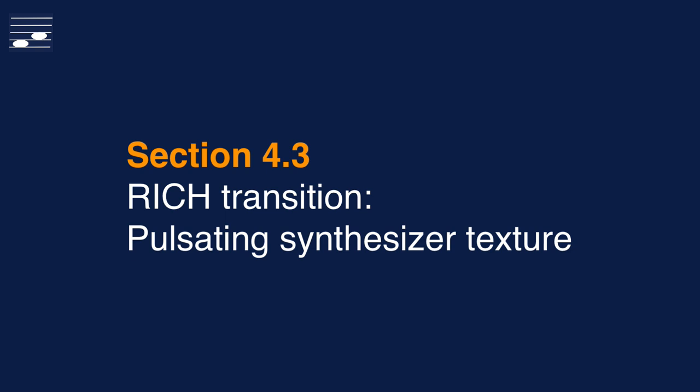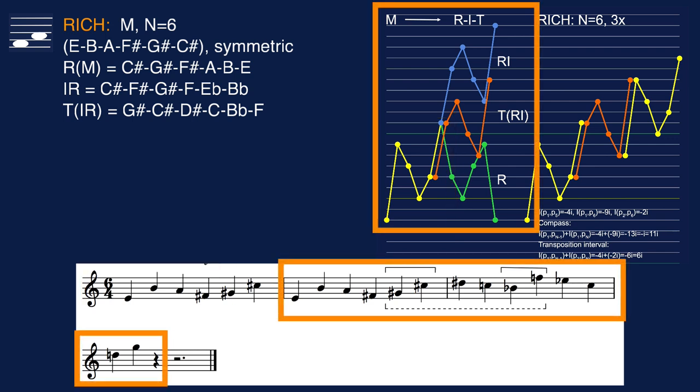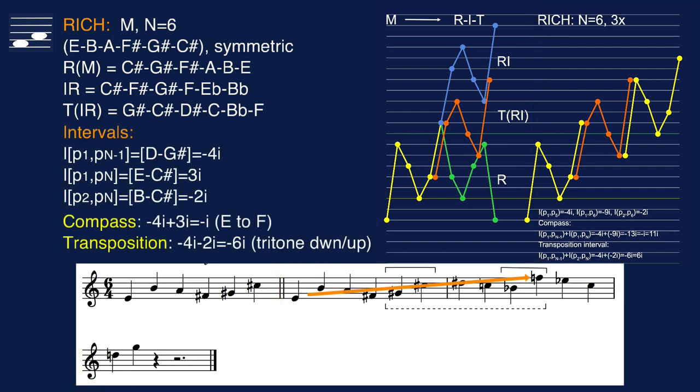For the final example we turn to a completely different idiom. Here a pulsating synthesizer texture where we'll also use a RICH transformation for the design of transitions. The complete series will consist of three statements of a six-note motif that contains inner symmetry between the first and second half. Verify this by looking at the mirror structure of the intervals. The outcome of the retrograde inversion transposition process and the interval class calculations is shown. From these we see that we have arisen by a semitone after the second subphrase and that the transposition interval has six semitones, the tritone interval. The total length of this chain is 14 notes.